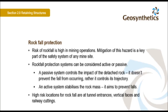The risk of rockfall is high in mining operations, and mitigation of this hazard is a key part of the safety system on any mine site. Rockfall protection systems can be considered active or passive. A passive system controls the impact of the detached rock — it doesn't prevent the fall from occurring, but rather controls its trajectory. An active system stabilises the rock mass and aims to prevent falls. High risk locations for rockfall include tunnel entrances, vertical faces, and railway cuttings.